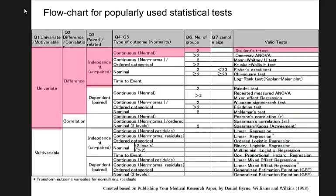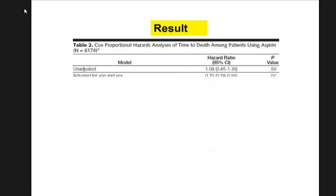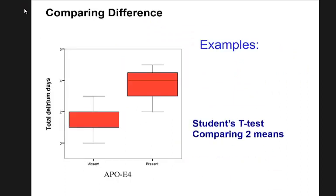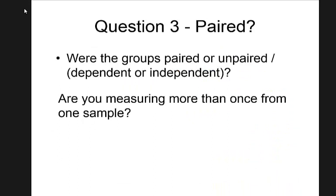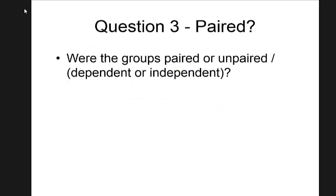Question three — only relevant when you're comparing groups. You have two, three, or four groups, and you want to see if the data are paired or independent. For example, before-and-after measurements: before is one group, after is another. Are these two sets of data related to each other or not?